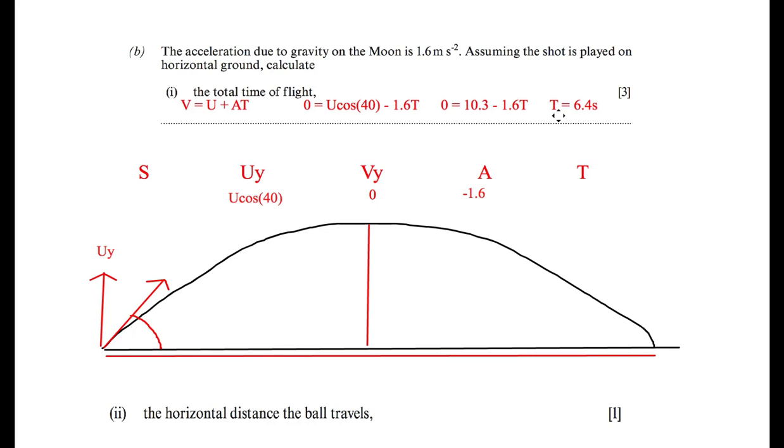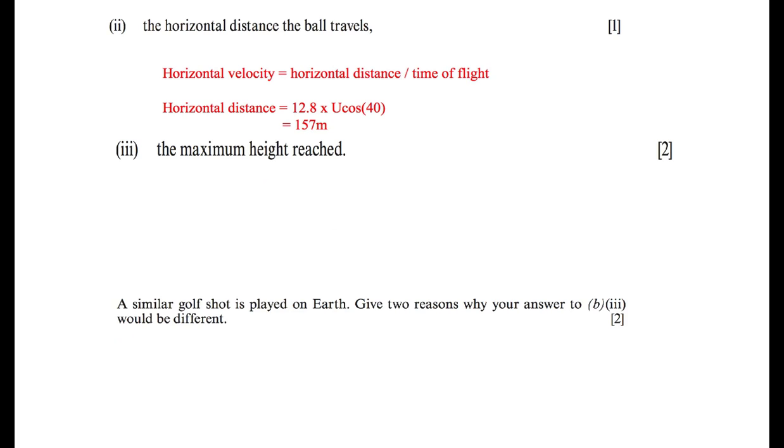However, initially you might think this is the end of that particular question, but it's a little bit more complicated than that. So what we've done, we've worked out the time it takes for the golf ball to go from here to here. But this is only halfway through the journey. Because it's symmetrical, we assume that it takes an identical path down this way. So the actual answer would be T equals 6.4 times 2. Therefore, the answer is T equals 12.8 seconds. So that last part was probably the hardest part of the whole question. So once you got that out of the way, then the rest of it should be quite straightforward.